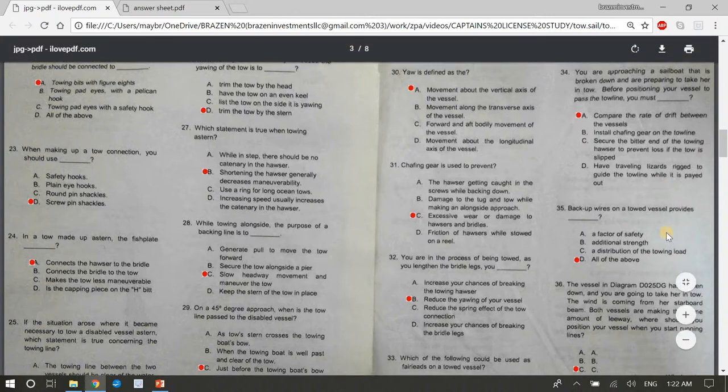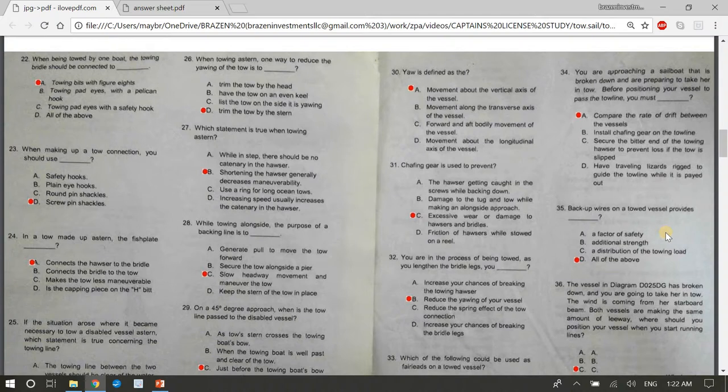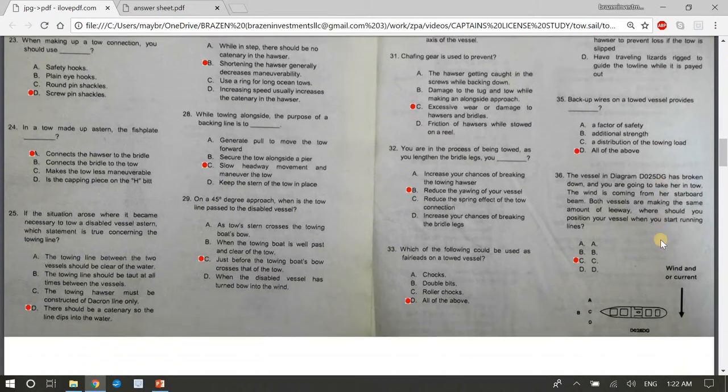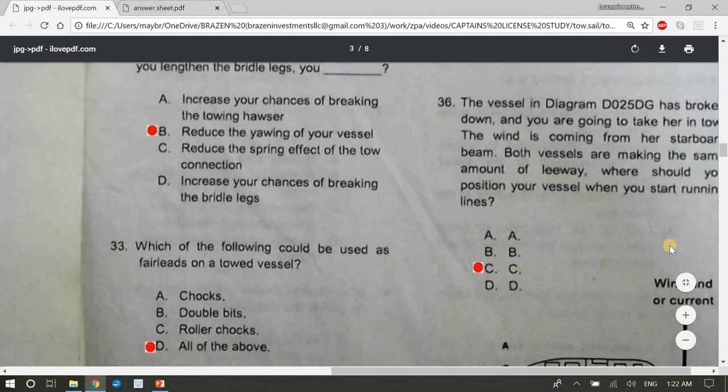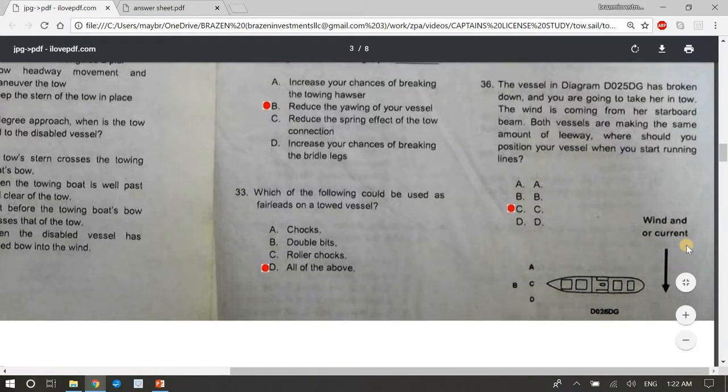35, backup wires on a towed vessel provides blank. A factor of safety, additional strength, a distribution of the towing load. The answer is D, all of the above. 36, the vessel in diagram 25DG has broken down and you are going to take her in tow. The wind is coming from her starboard beam. Both vessels are making the same amount of leeway. Where should you position your vessel when you start running lines? The wind is coming from this way and both vessels are making the same amount of leeway. Where should you position your vessel when you start running A, B, C, or D? The answer is C.